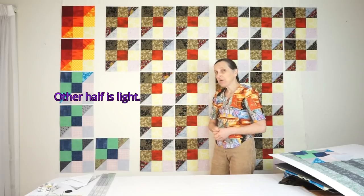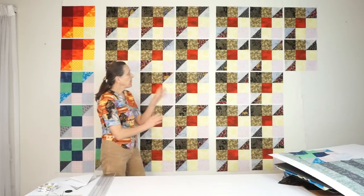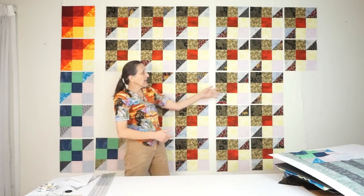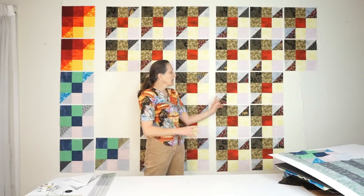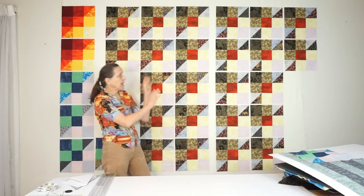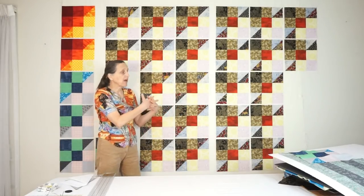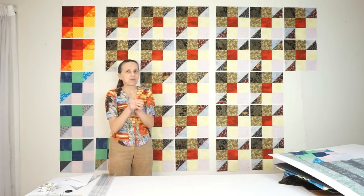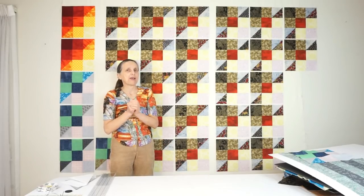I will show you two methods today. With the first method we will make 12 of these blocks plus 12 of these almost identical blocks where the light and dark triangles are switched. We will make these 12 plus 12 blocks with only 74 seams total, which is just two seams more than three seams per block. That's very fast.